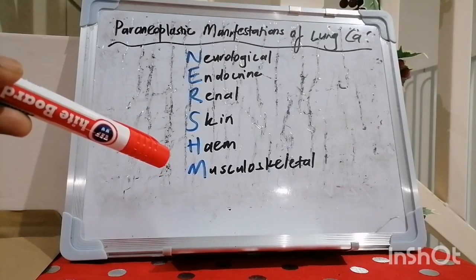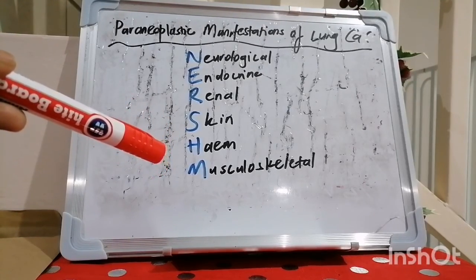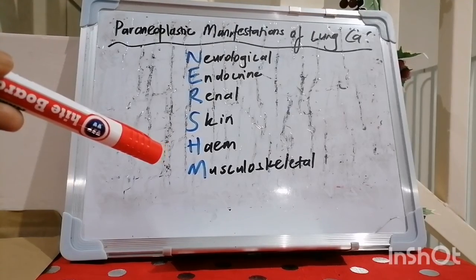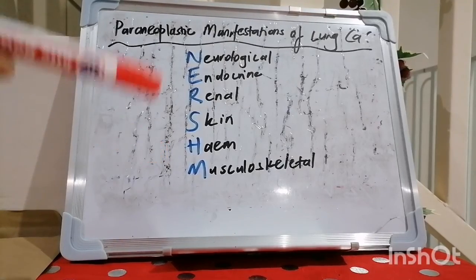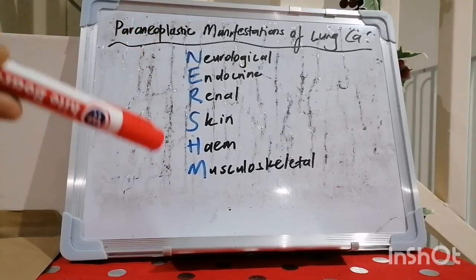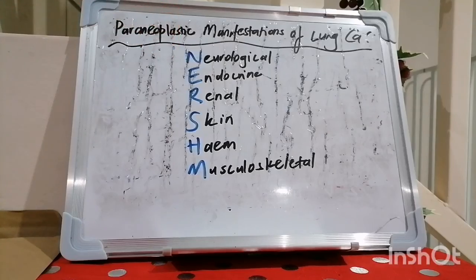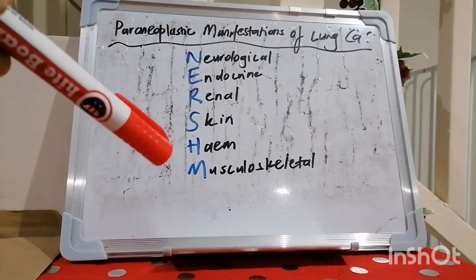M stands for musculoskeletal manifestations, which include clubbing and hypertrophic pulmonary osteoarthropathy. So there you have it, guys — paraneoplastic manifestations of lung cancer: NURSUM!